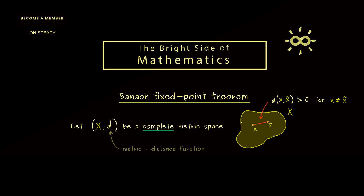Moreover, we also have two additional natural properties for this distance function. On the one hand we have symmetry, so it does not matter if we measure from x to x-tilde or from x-tilde to x. And on the other hand we have the famous triangle inequality, which means when we go a detour, the distance will not get smaller. So this is a metric space in a nutshell — we can measure distances in the set X.